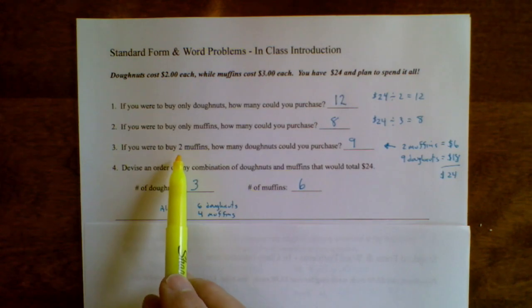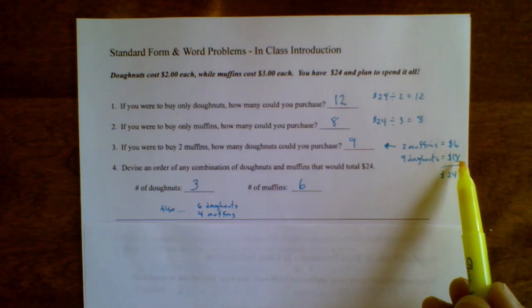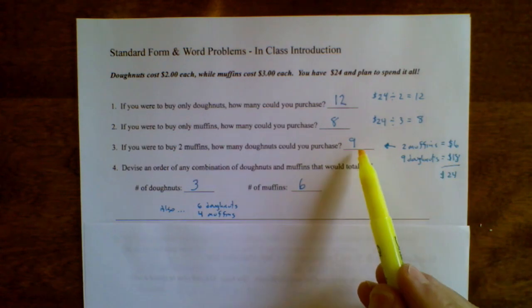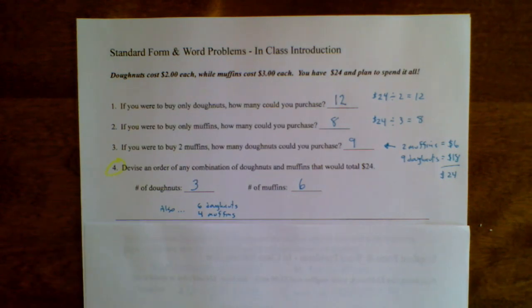Okay, if you were going to buy two muffins, that's going to cost you $6, which means you have $18 left over, enough for nine donuts. And for your question number four, you might have come up with a different combination than me, but I know three donuts and six muffins will use up exactly $24. I know six donuts and four muffins will also use up exactly $24.